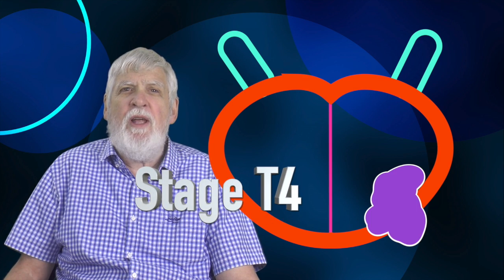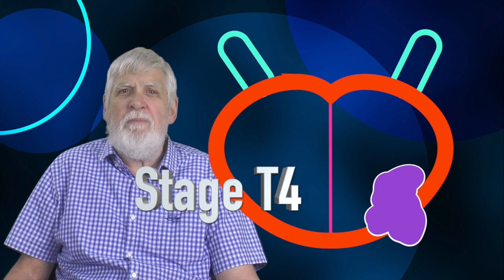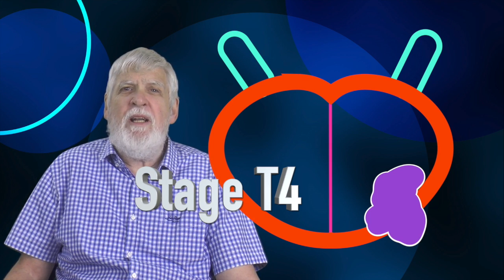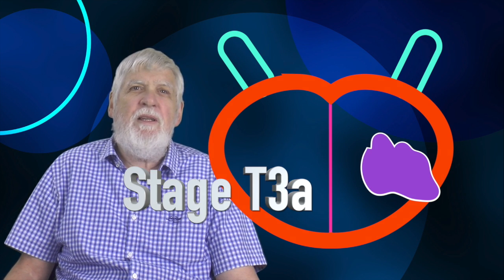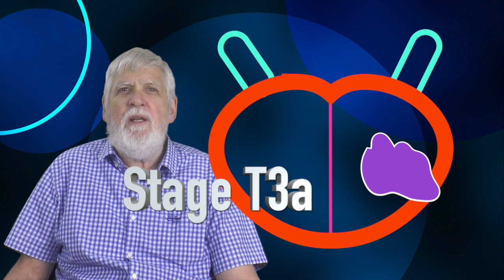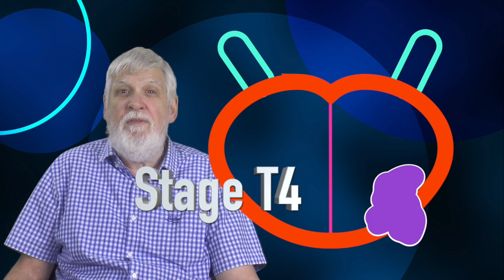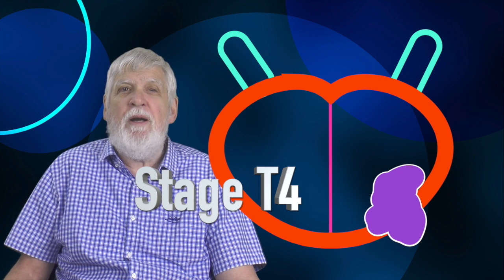The final T rating, T4, comes if the cancer has grown out of the prostate and into other organs like the bladder or bowel, both of which are uncomfortably close by. So, T3A growing through the wall, T3B growing into the seminal vesicles, T4 growing into other nearby organs.